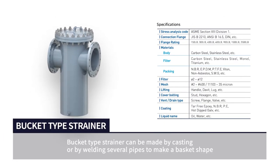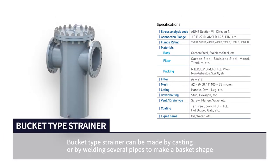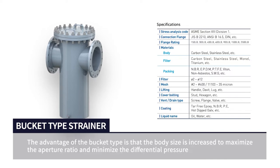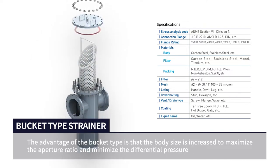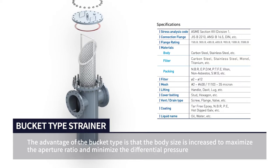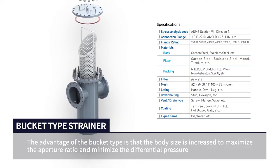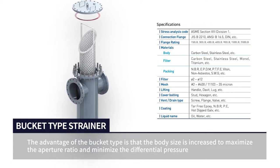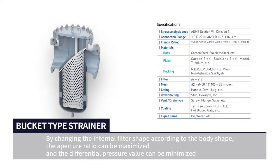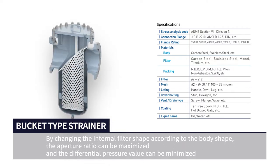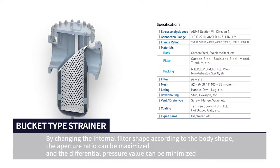Bucket type strainer can be made by casting or by welding several pipes to make a basket shape. The advantage of the bucket type is that the body size is increased to maximize the aperture ratio and minimize the differential pressure. By changing the internal filter shape according to the body shape, the aperture ratio can be maximized and the differential pressure value can be minimized.